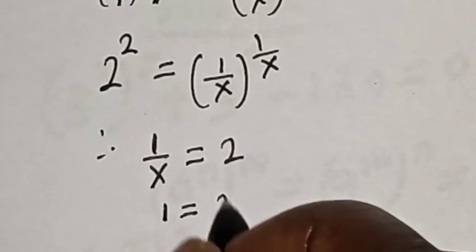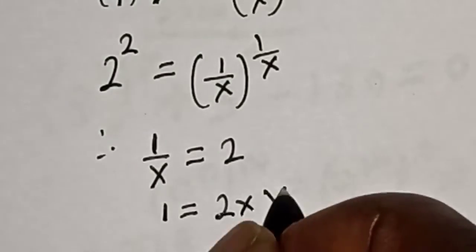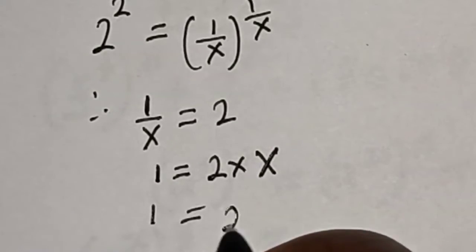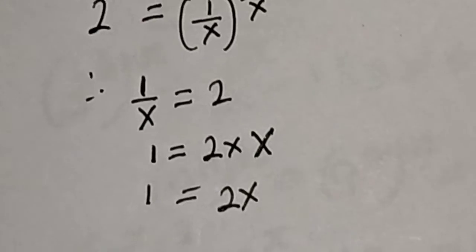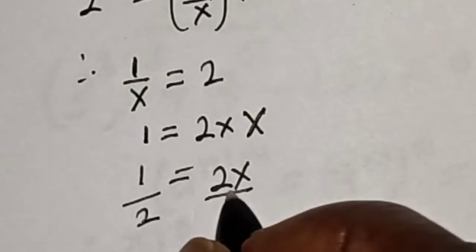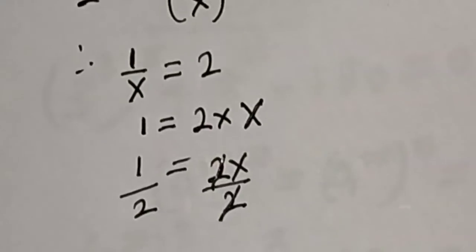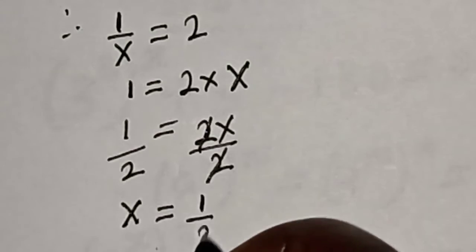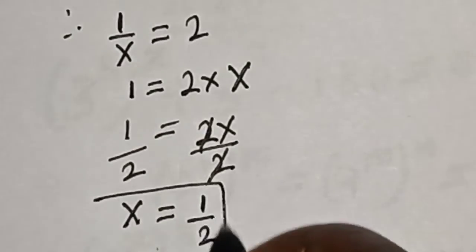Then 1 is equal to 2s. Now let's divide both sides by 2. This will cancel, so s is equal to 1 over 2, and this is the final answer.